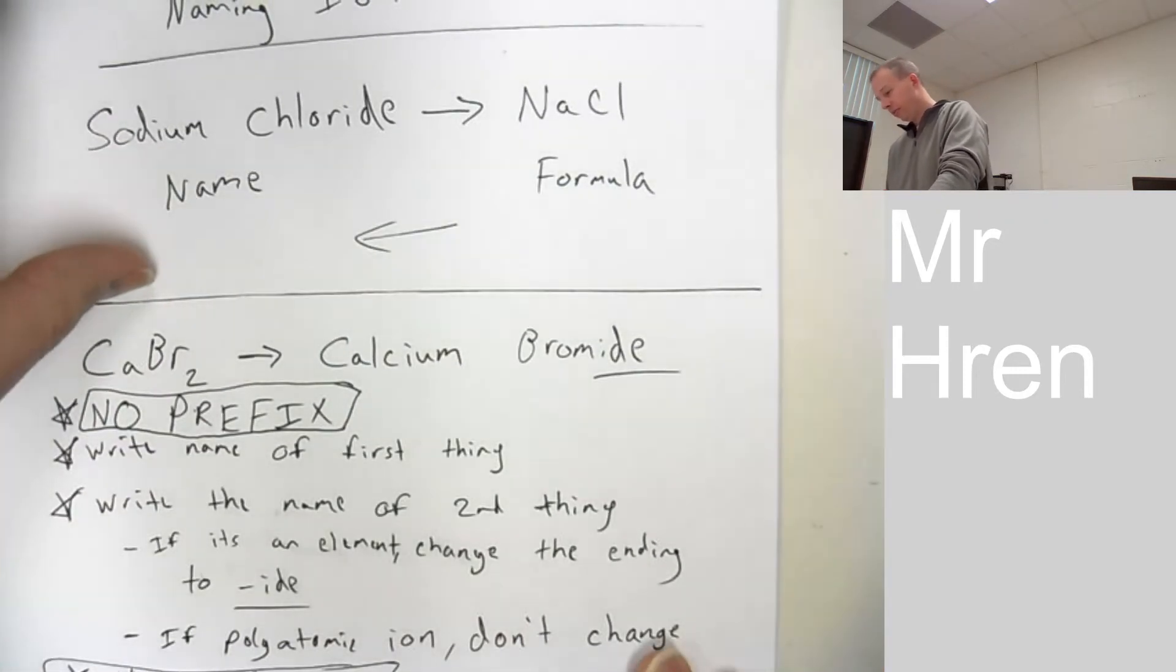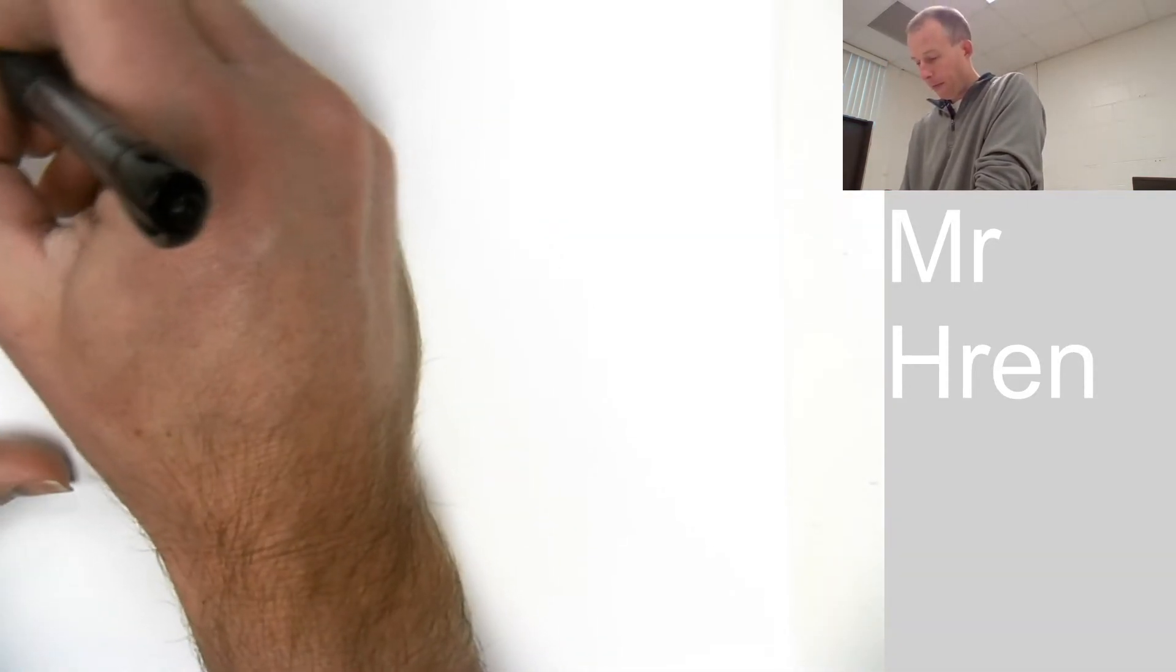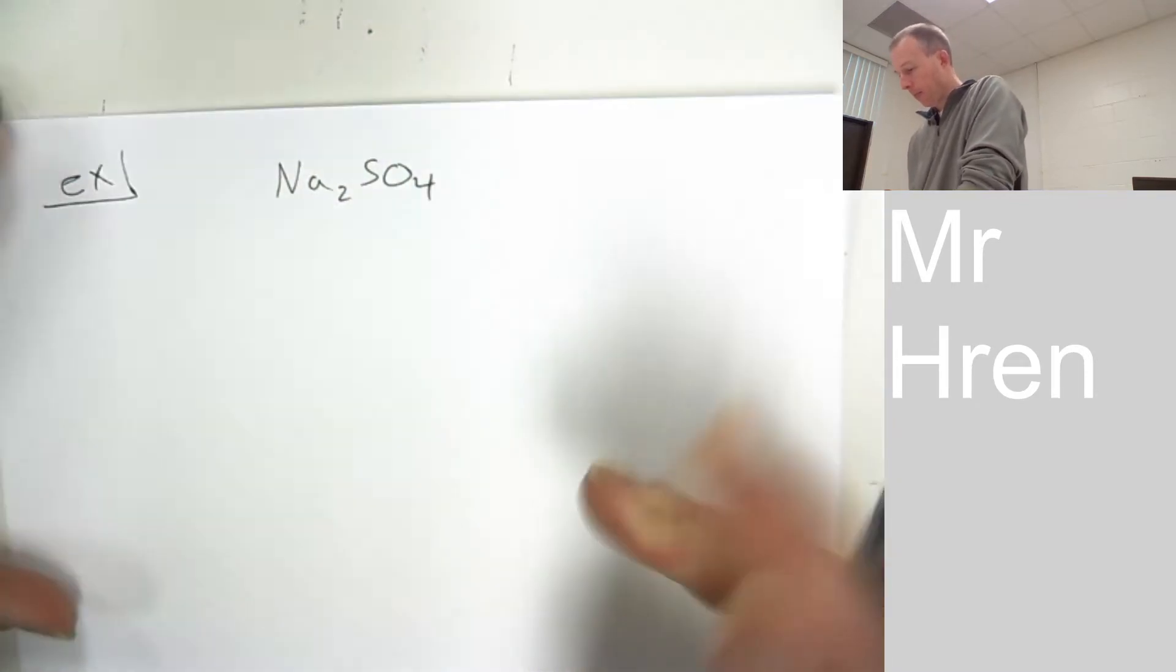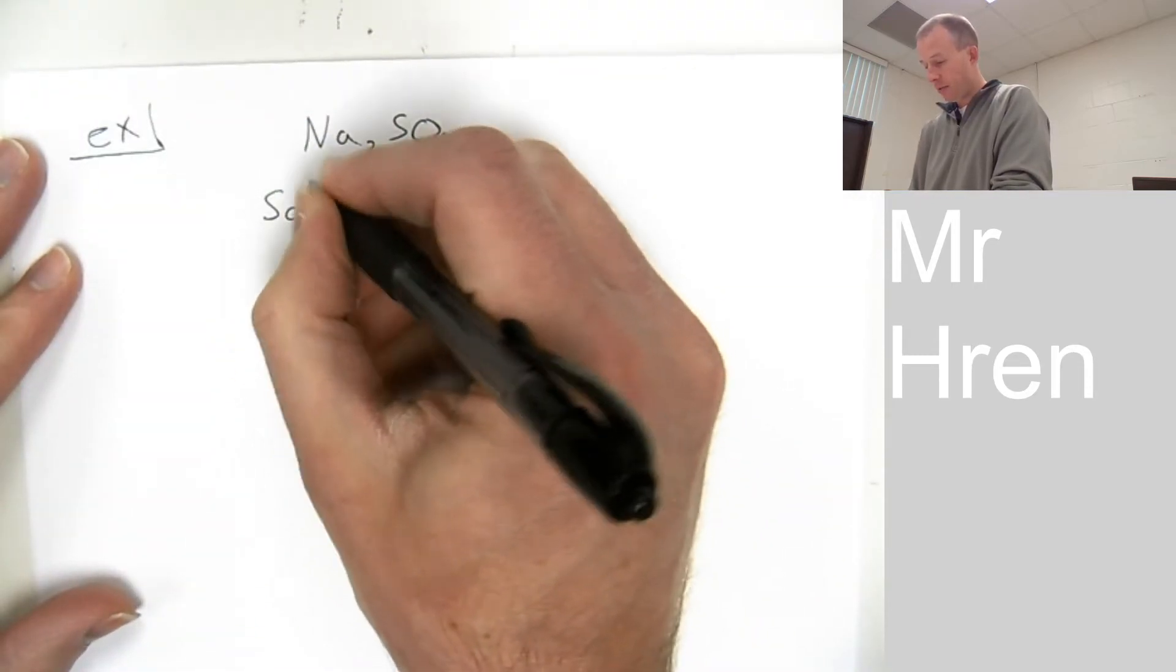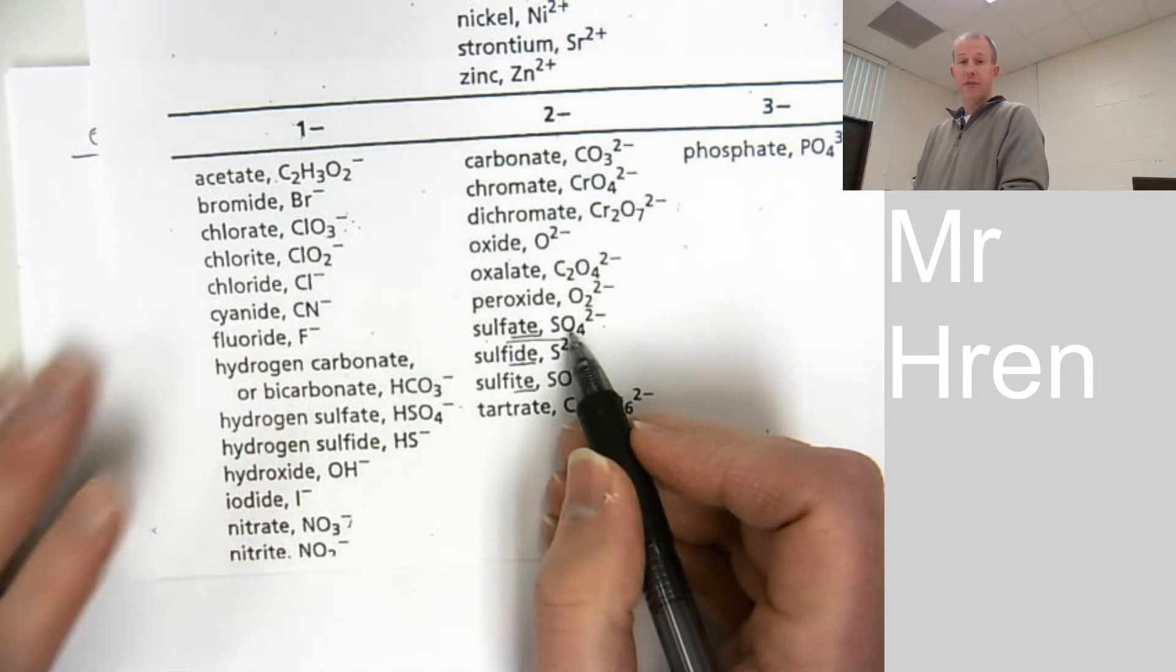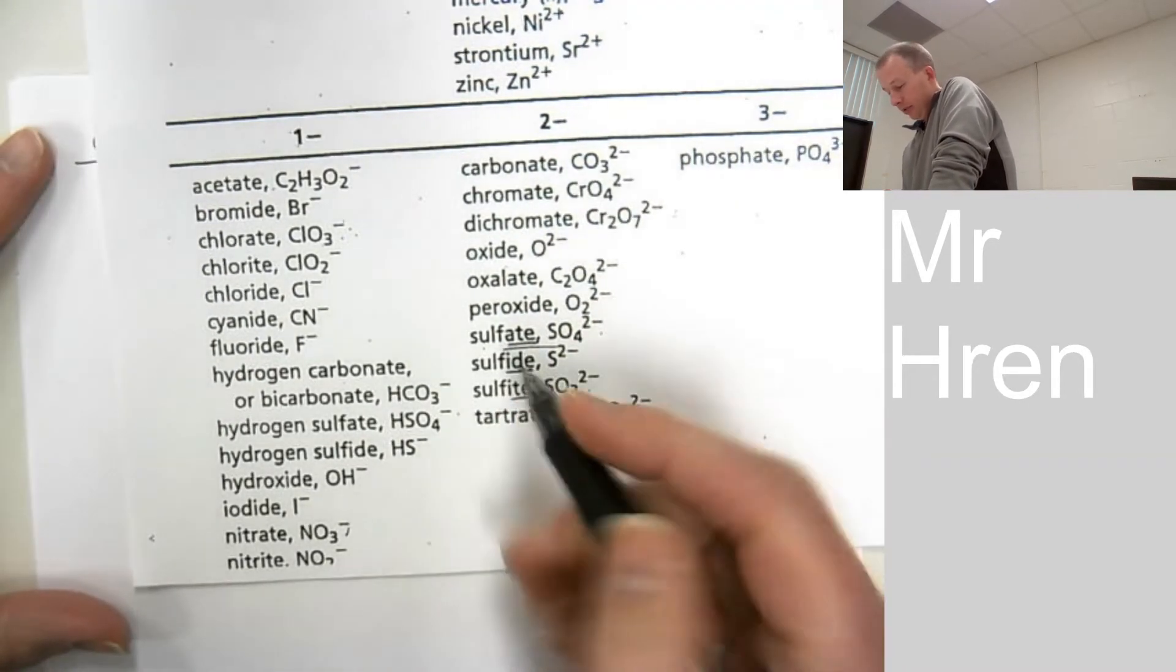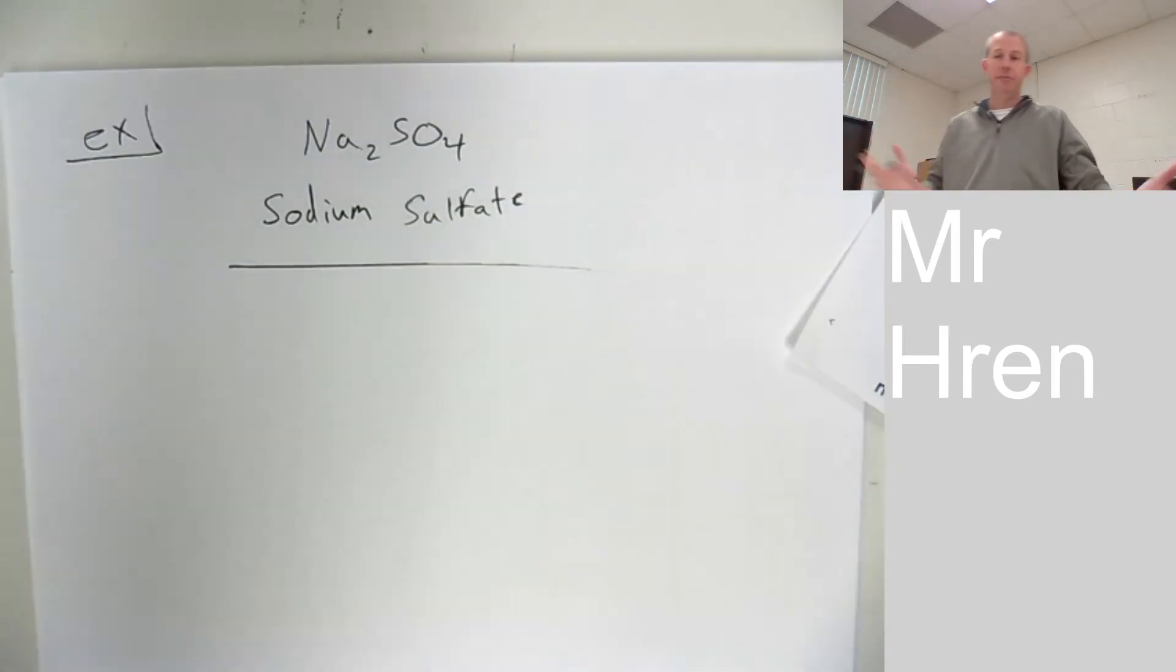Another example. So, Na2SO4. You got to look up. Here's an example. Sodium. So, Na is sodium. So, you're just going to write sodium. Now, SO4. You're like, oh, I don't know what that is. Sulfate. SO4 is sulfate. So, you're just going to write sulfate. Just SO4 sulfate. Oh, that was rocket science. That's it. They're done with the problem. Congratulations. Next.